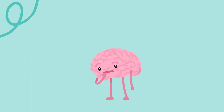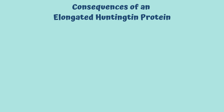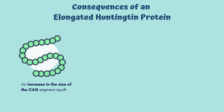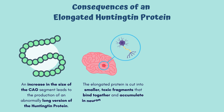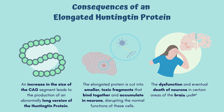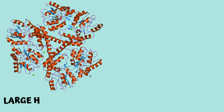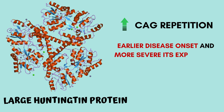The pathophysiology of Huntington's disease is due to the elongated Huntingtin protein. An increase in the size of the CAG segment leads to production of an abnormally long version of Huntingtin protein. This elongated protein is cut into smaller toxic fragments that bind together and accumulate in neurons, disrupting normal cell function. Dysfunction and eventual death of neurons in certain brain areas causes the signs and symptoms of Huntington's disease. A larger Huntingtin protein with more CAG repeats causes earlier disease onset and more severe expression.